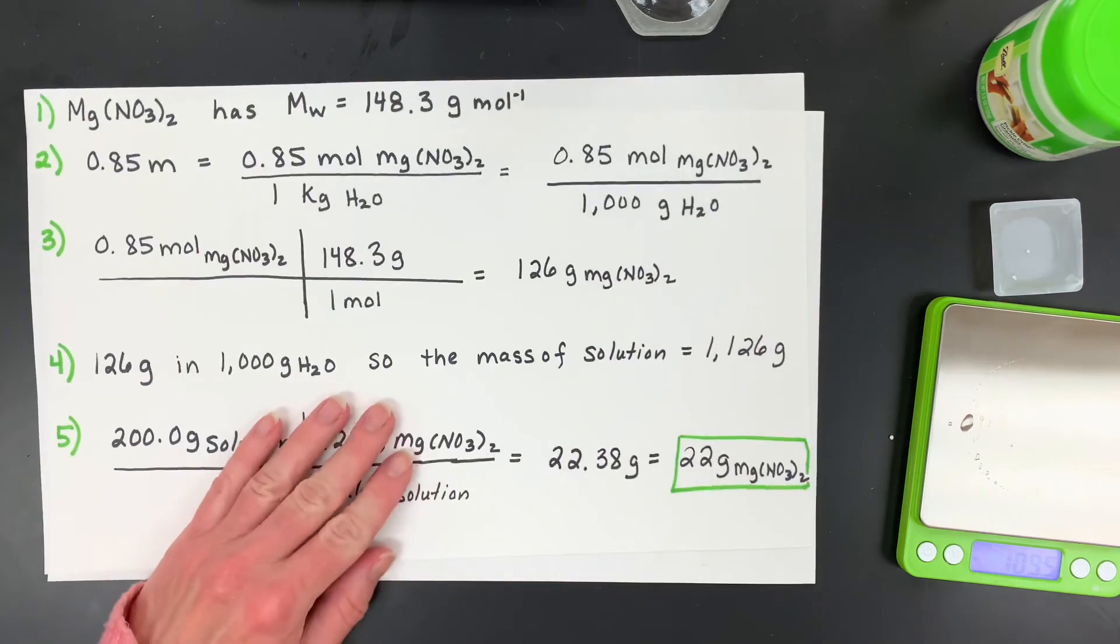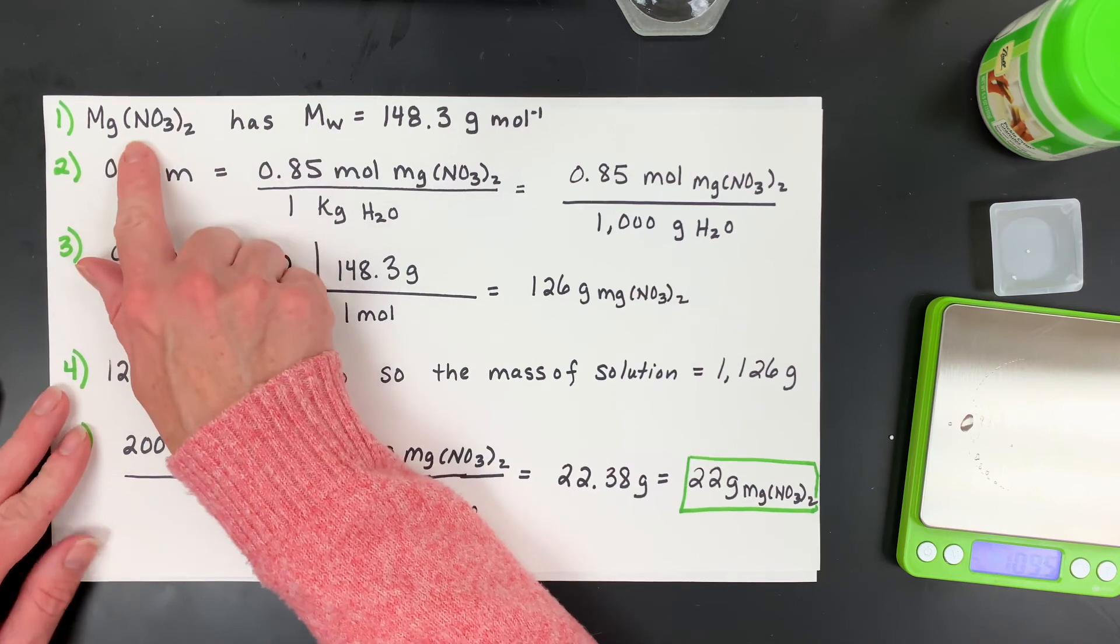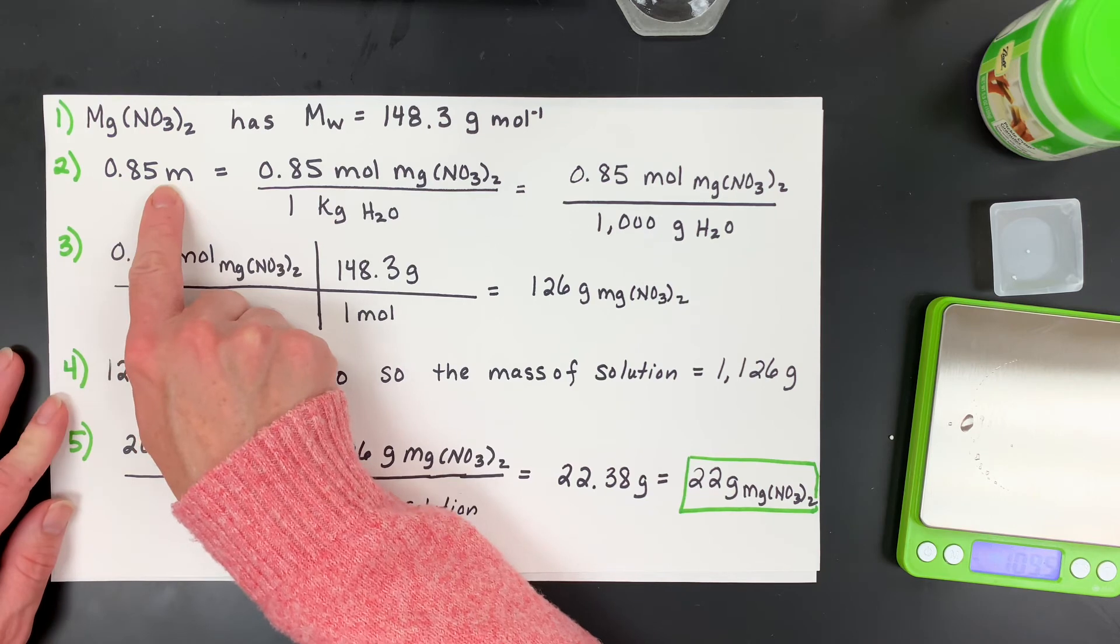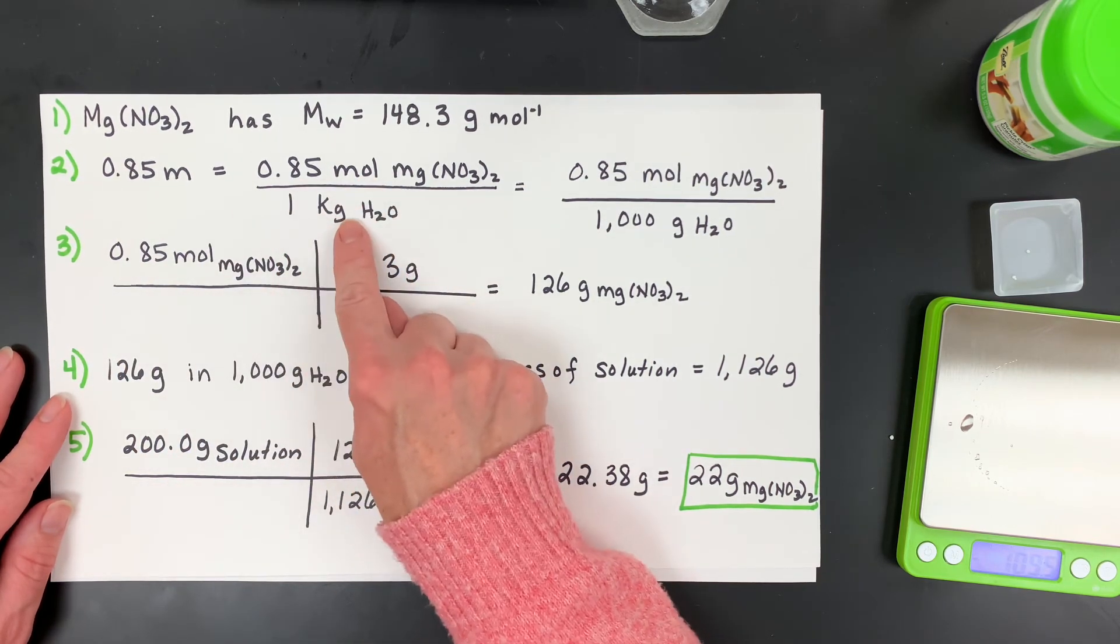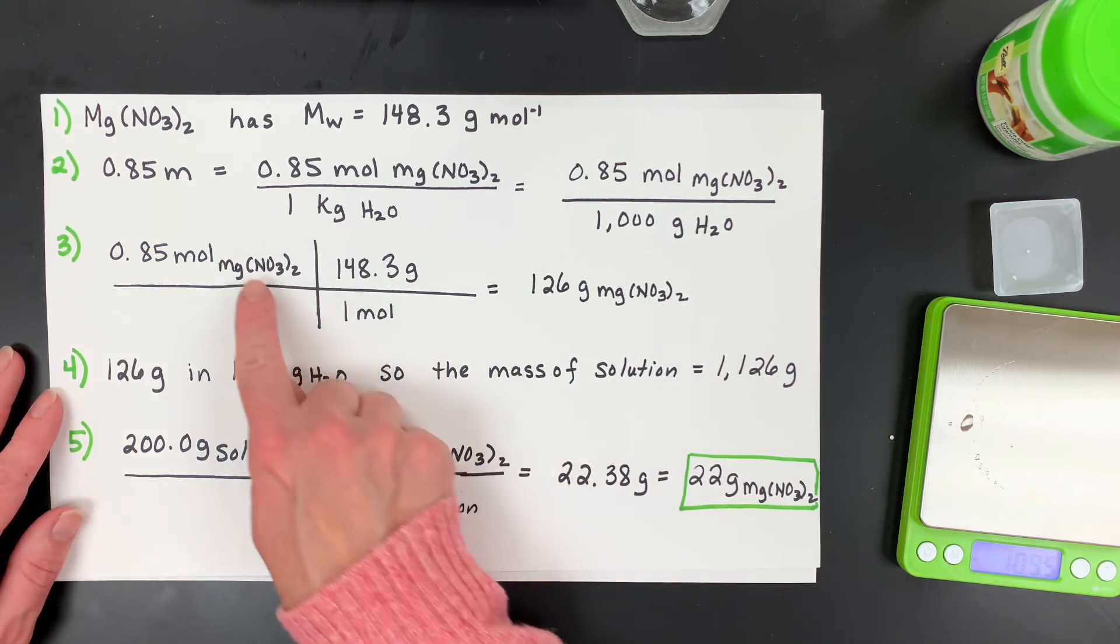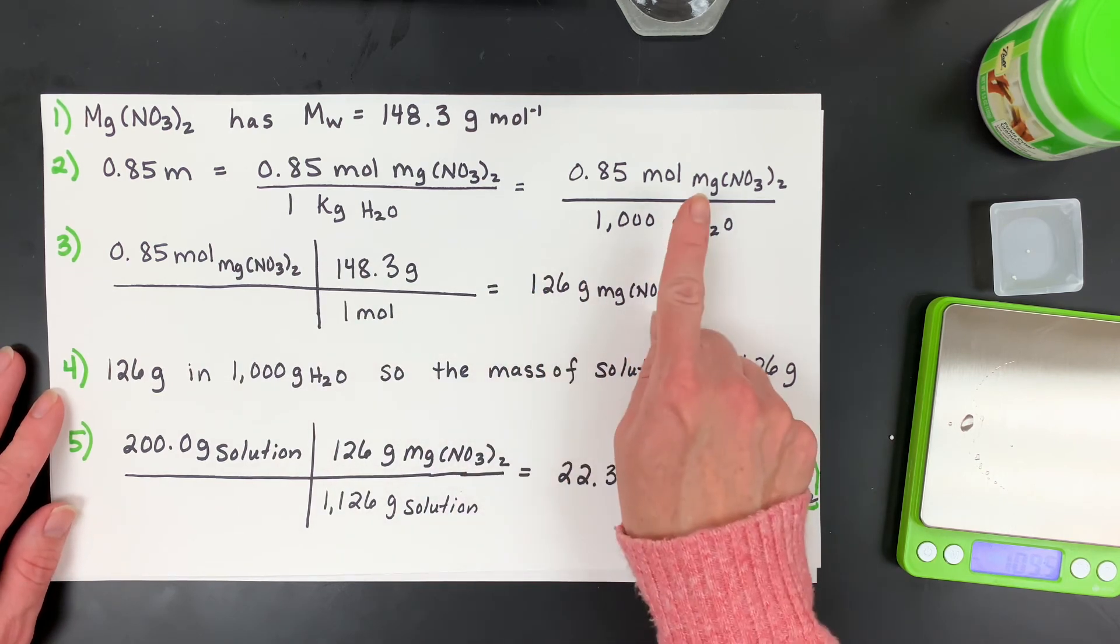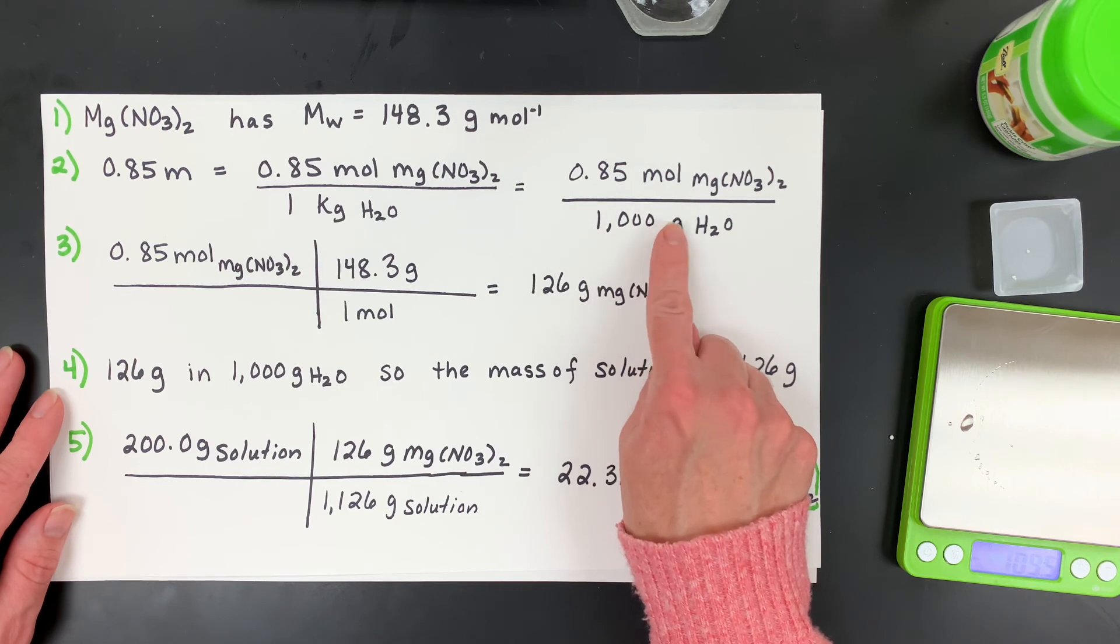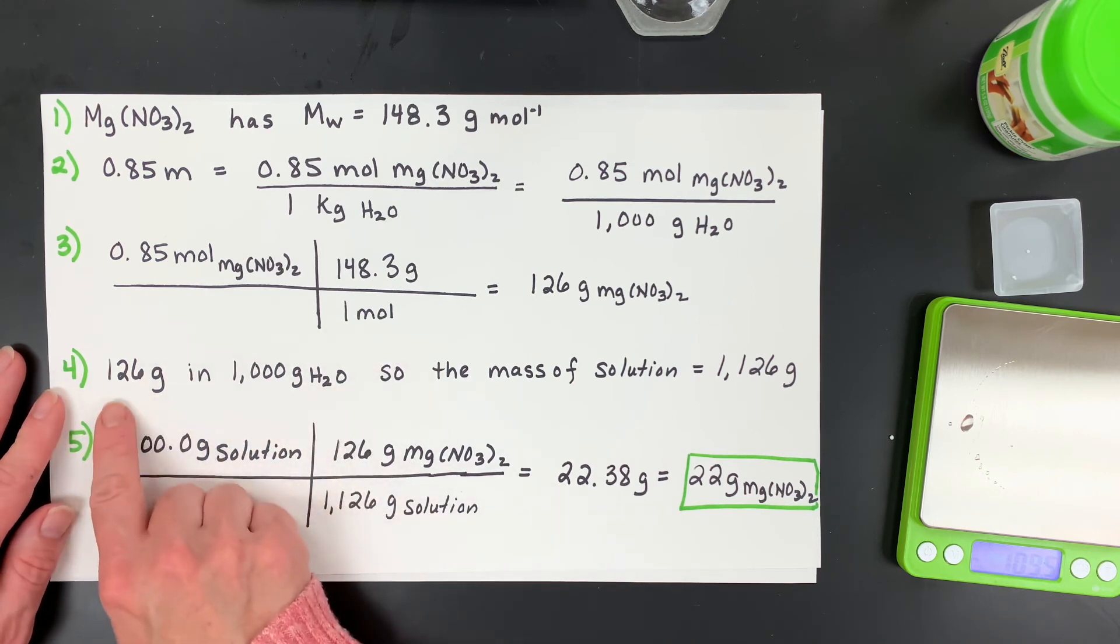First off, we have to write the chemical formula for magnesium nitrate correctly. Then the molar mass, we know we want to have 0.85 molal. So that means 0.85 moles for every one kilogram of water or for a thousand grams. Then we're going to use that molar mass to find the mass that I would have if I made 1000 grams dissolve with it or one kilogram of water dissolve with it.